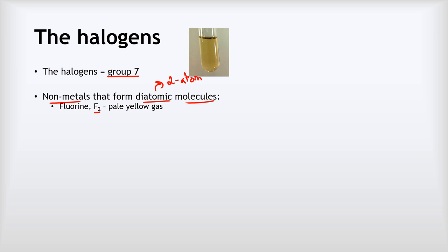Fluorine is a pale yellow gas. We can see fluorine here — there's our F2. Now clearly that there is a liquid, and the reason why is because it's such a pale yellow that if I showed you the gas it would just look like an empty test tube. So this is actually liquid fluorine at about minus 200 degrees Celsius.